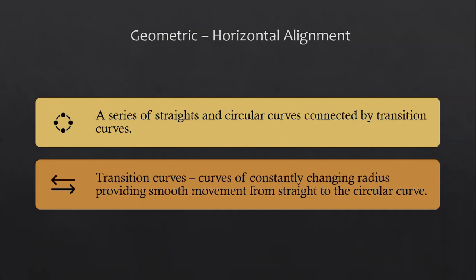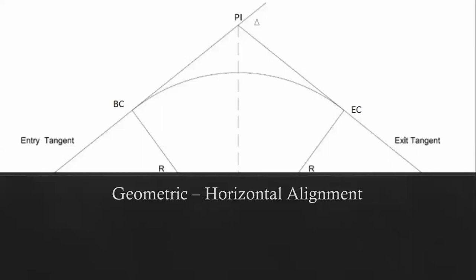A horizontal alignment is a series of straight and circular curves connected by transition curves. Transition curves are curves of constantly changing radius providing smooth movement from a straight to a circular curve. So if you have a straight line and all of a sudden there's a turn, a transition curve smooths out between the straight line and the curve — that's why its radius constantly changes. In the example shown, you have a straight line, then a curve, and the transition curve connects them.